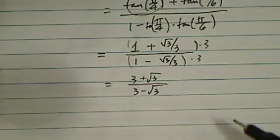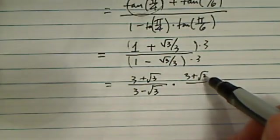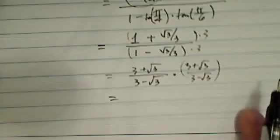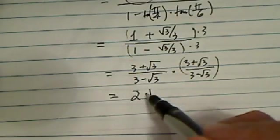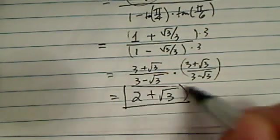Now in normal mathematical adequacy, we like to rationalize it. So 3 plus radical 3, 3 minus radical 3. And the final answer, when you multiply it out and simplify it, you'll see it's equal to 2 plus radical 3. That's the answer.